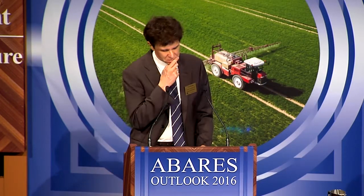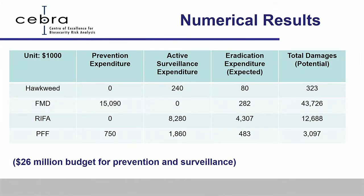Here are the results — mean values from the pilot study, spending $26 million on top of the existing system including passive surveillance and border protection. What I want you to see is that the optimal spread of monies is quite varied across prevention, surveillance, and eradication — not lumped into one thing. With FMD, quite a bit goes to prevention — border measures to prevent FMD from arriving in Australia — but nothing on active surveillance, which surprises my animal health colleagues.